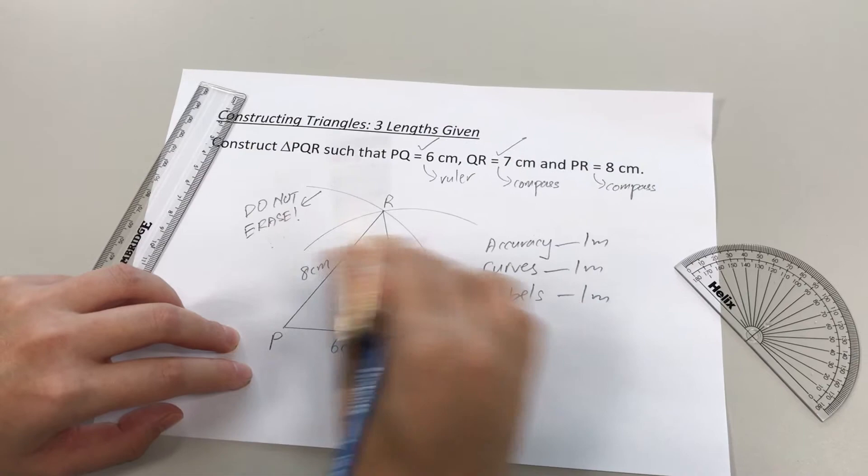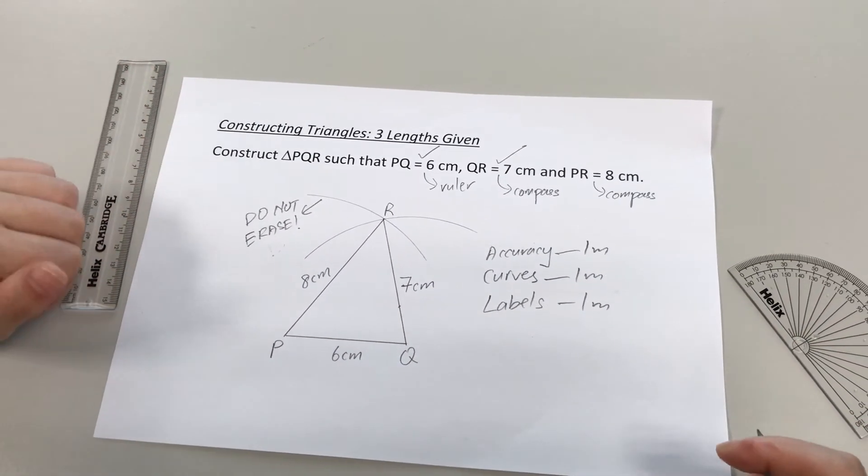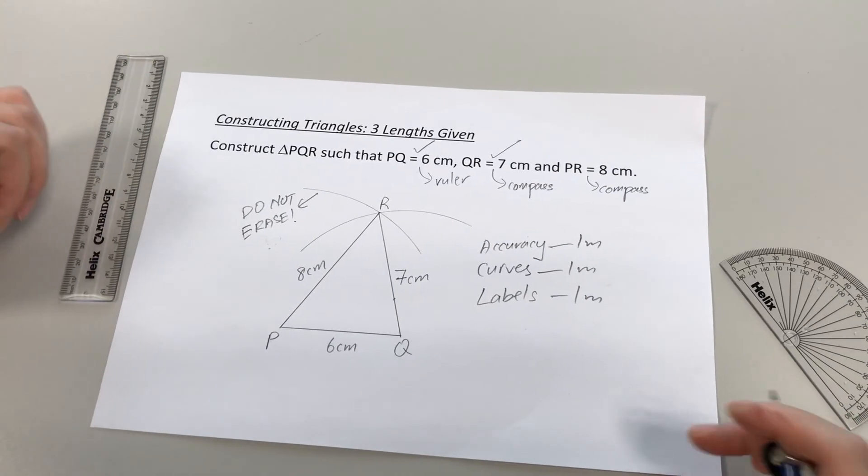All right, which is the P, Q, R as well as the lengths. All right, so that is how you get your three marks when you are asked to draw a triangle given the three lengths.